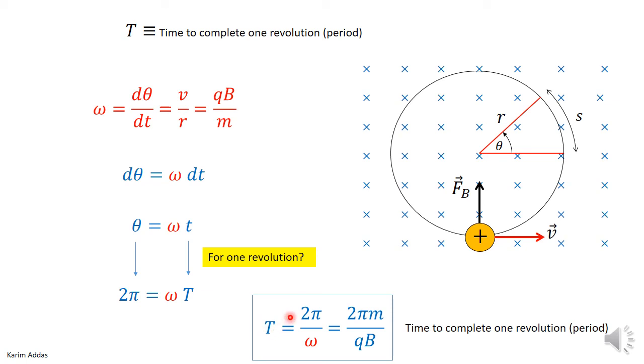So the period of revolution turns out to be 2π over omega, and omega is qB/m, so you get T = 2πm/qB for the period of revolution.